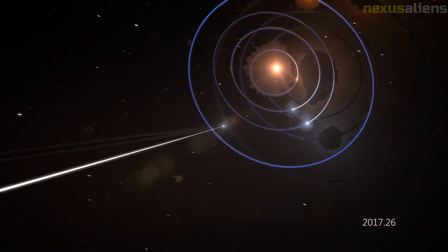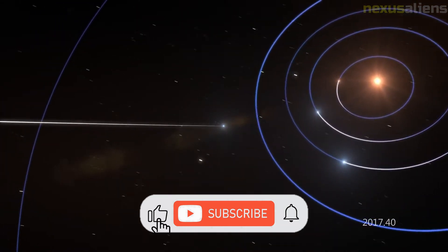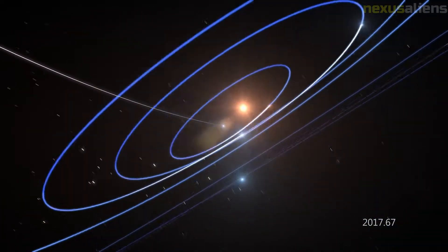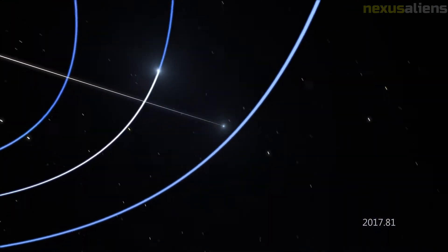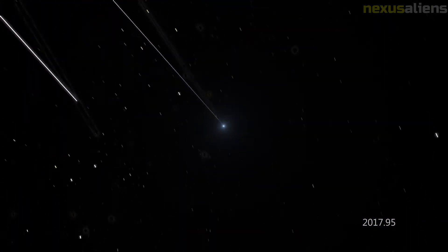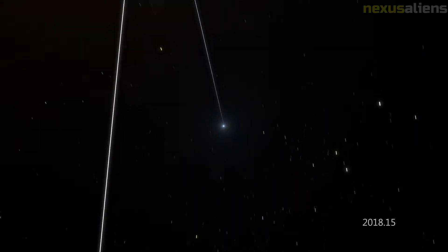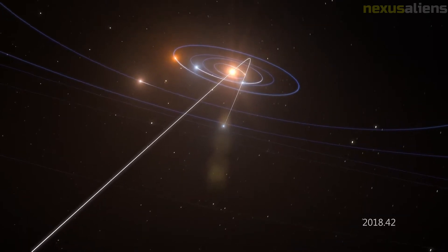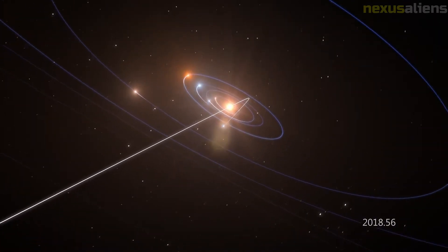I, for interstellar object. As the first object so identified, Oumuamua was designated 1I, with rules for the eligibility of objects for I numbers and the names to be assigned to these interstellar objects yet to be codified. The object may be called 1I, 1I/2017 U1, 1I/Oumuamua, or 1I/2017 U1.